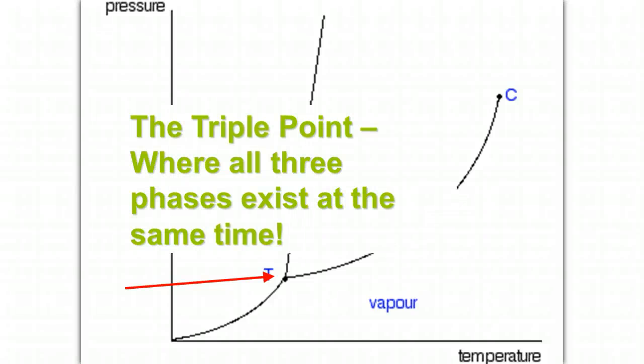T represents the triple point. This is the point where all three phases can coexist at the same time. The triple point, you'll notice, is going to be a state of equilibrium between all three phases, solid, liquid, and gas. These are all the points on the graph that you need to be familiar with in order to interpret a phase diagram.